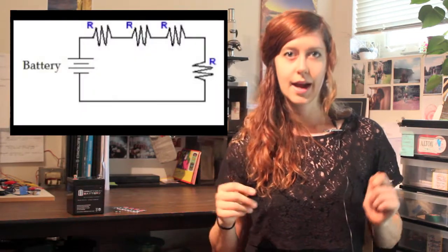Well, series electrical connections are connections made head to tail, or in line, like this. And parallel connections are connections made head to head, or in loops, like this.